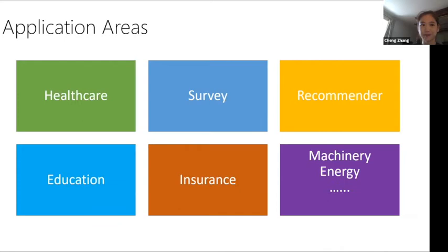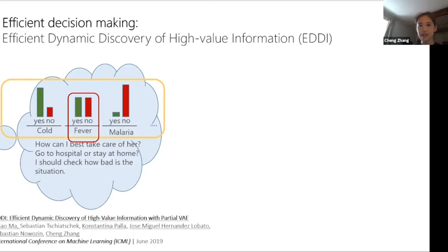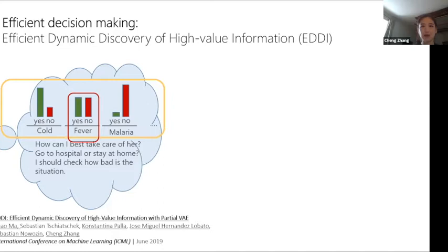Now let's see how we can use machine learning to reduce the information cost while retaining decision quality. Going back to the Alice and Bob example: when Bob observes Alice coughing, he estimates probabilistically that Alice may have a cold, may or may not have a fever, and probably doesn't have malaria. Bob can estimate the situation of everything he doesn't know yet in a probabilistic manner.